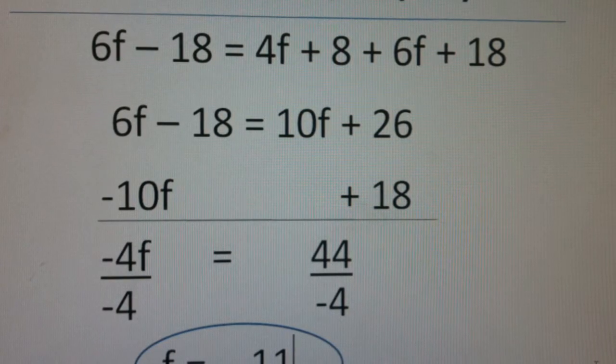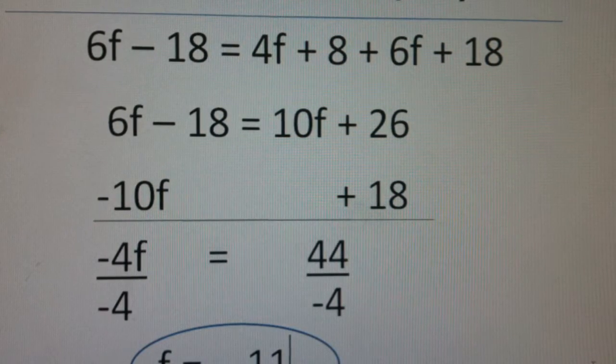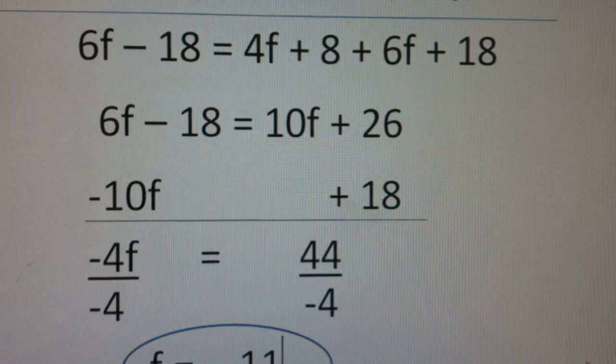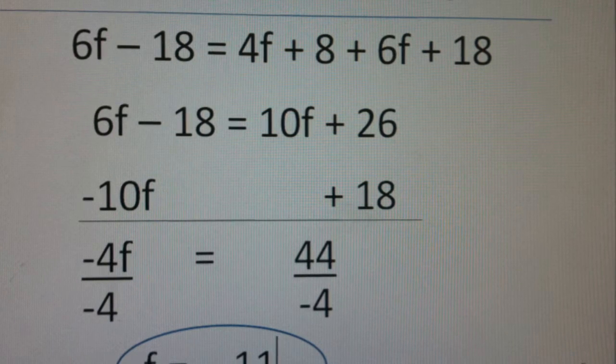Second, we combined the like terms that are on the same side of the equal sign. On the right hand side, we would need to combine 8 and 18, and then we also need to combine 6f and 4f.